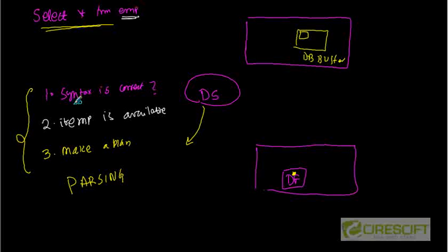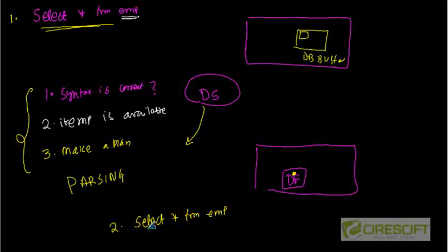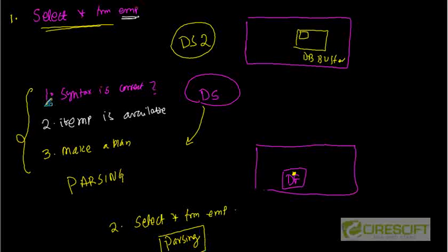Parsing means the SQL is compiled, the execution plan is known, and all those things together. Now, let's say after we have done 'SELECT * FROM EMP', another user comes and also gives 'SELECT * FROM EMP'. User number two has his own dedicated server process, and that dedicated server process two is going to do all the parsing again — all three steps identical to user number one. This is bad, because you are reinventing the wheel.